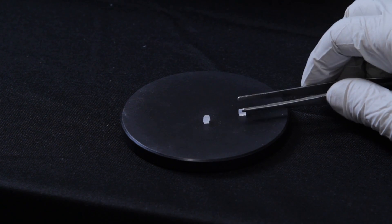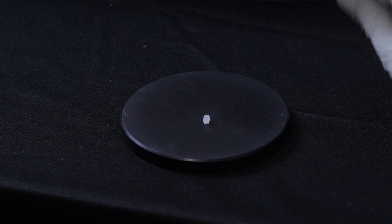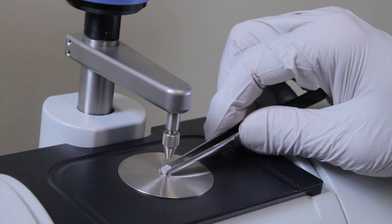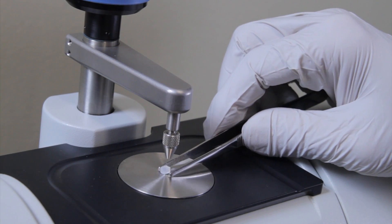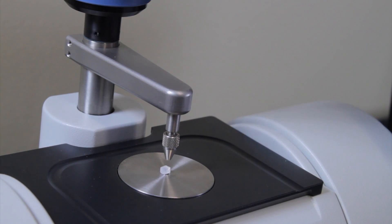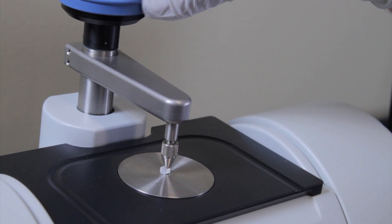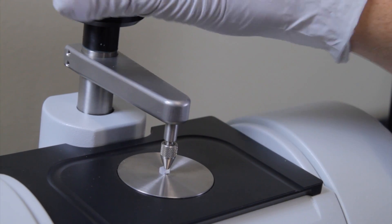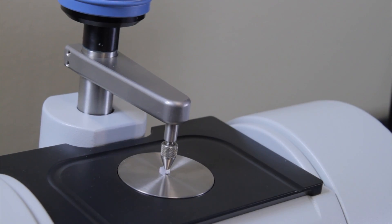So, let's look at a solid sample we can analyze. This is a polymer pellet that I can just put on the ATR crystal and then turn the pressure tower down to where it pushes firmly against the crystal itself.